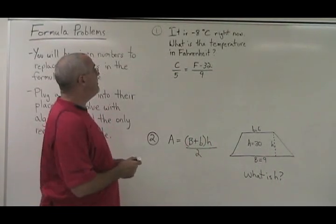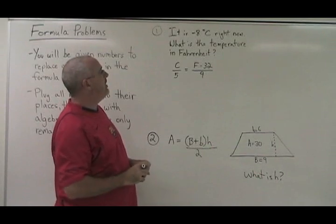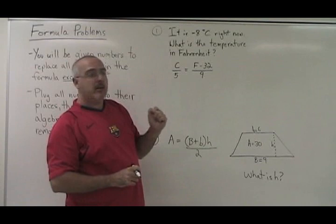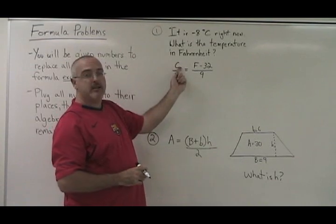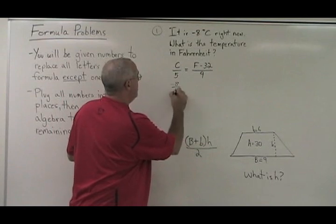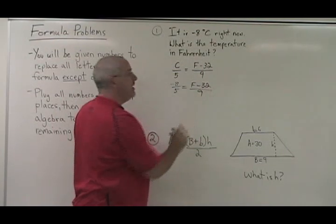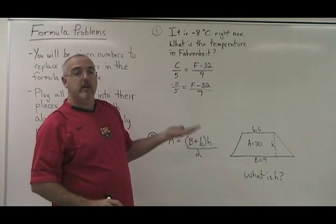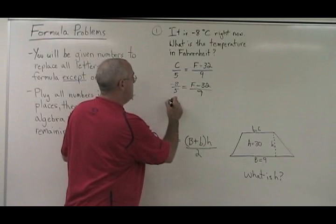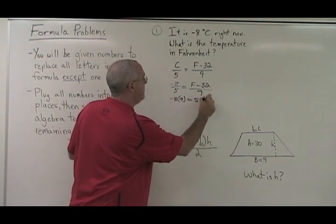In example 1, it is negative 8 degrees Celsius right now. What is the temperature in Fahrenheit? We're given the number negative 8, and it will go in the position of C in the formula. So we write negative 8 over 5 equals F minus 32 over 9. It's a proportion: top times bottom equals bottom times top. Negative 8 times 9 equals 5 times F minus 32.